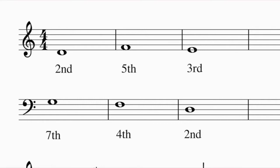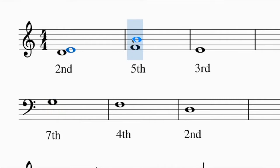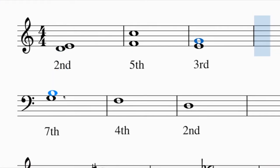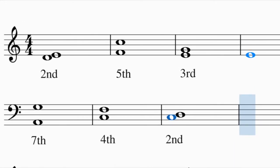When we construct size, we always start with the note that's given and then count up or down from that note. If I want to build a second, I start on the note and count up - one, two gives me a second. A fifth: one, two, three, four, five. A third: one, two, three. The same goes for descending intervals. One thing to notice: odd intervals are always on the same line or space, while even intervals are always on a different line or space.